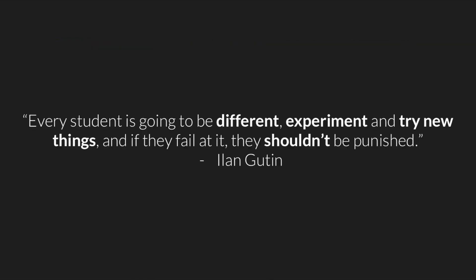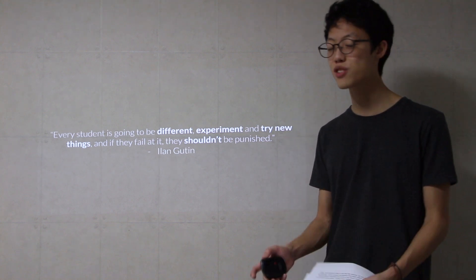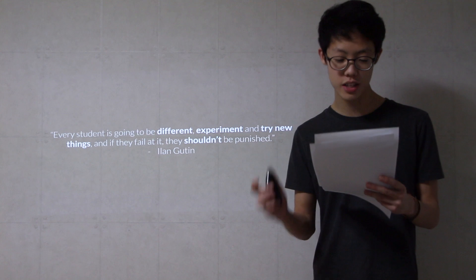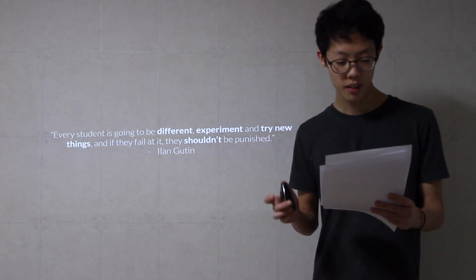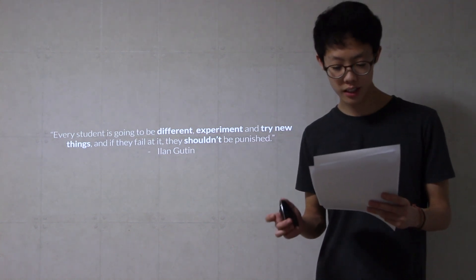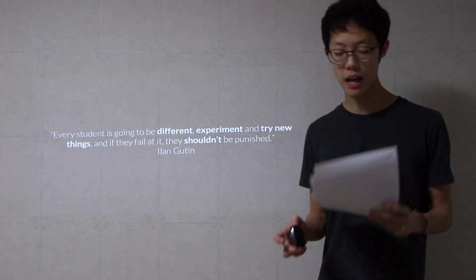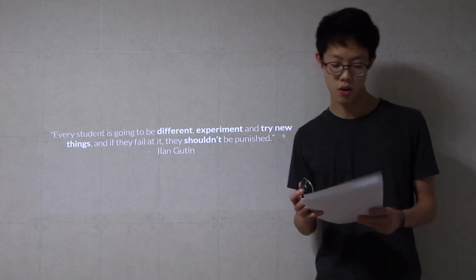Each student is going to be different — experiment and try new things — and if they fail at it, they shouldn't be punished. You might be thinking college expectations are different from high school expectations, but if an art class's purpose is to only teach skills and not help build a creative sense of mind, then rubrics on the class itself would be promoting mechanical instruction that bypasses the human act of composing. However, it's not just art.